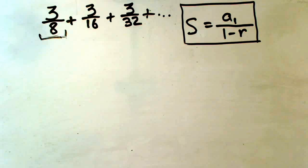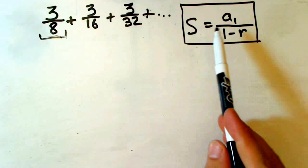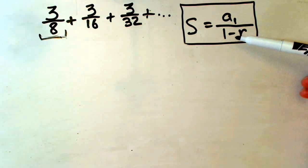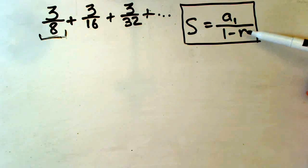In this video we are going to check how to find the sum of an infinite geometric series. Sum of infinite geometric series equals the first term divided by 1 minus the common ratio.